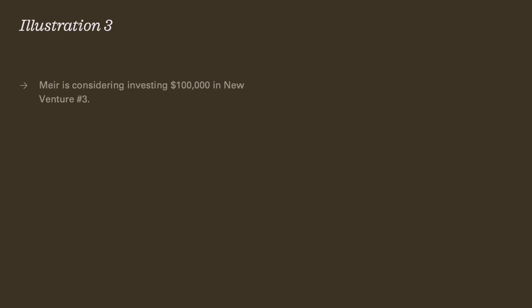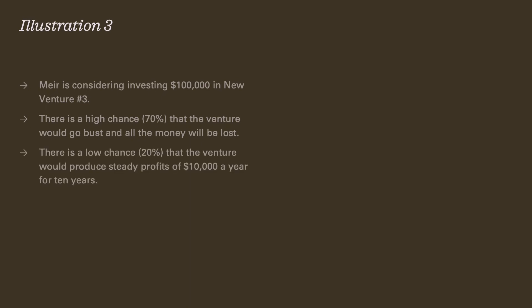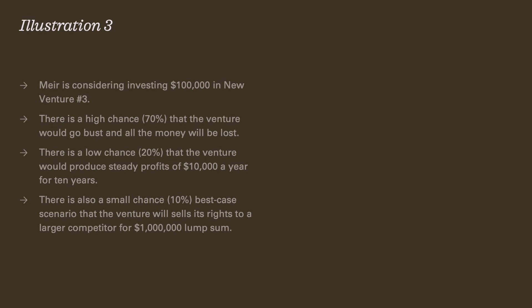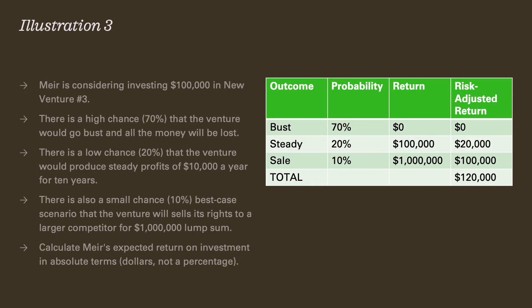Let's look at one more illustration to round out our understanding of how risk preferences can play into the calculation. Meyer is considering investing $100,000 in new venture number three. There's a 70% chance the venture will go bust and all the money will be lost, a 20% chance of steady profits of $10,000 a year for 10 years, and a small chance of a best-case scenario where the company sells to a competitor for a million dollars. The numbers are deliberately engineered to arrive at the same risk-adjusted return of $120,000 as Venture 1. So setting aside Venture 2 which returned $130,000, which of the two options returning $120,000 — venture one or venture three — is better for Meyer?